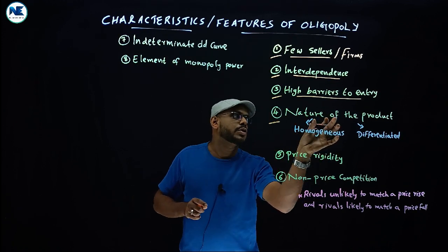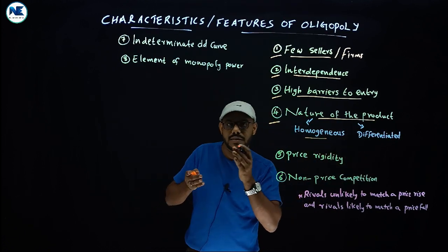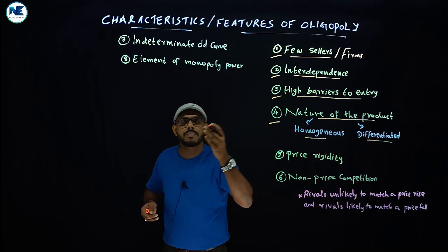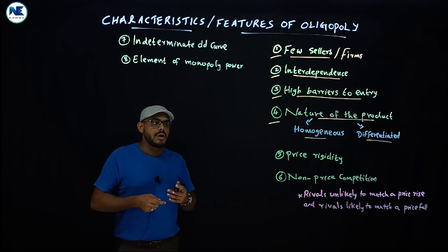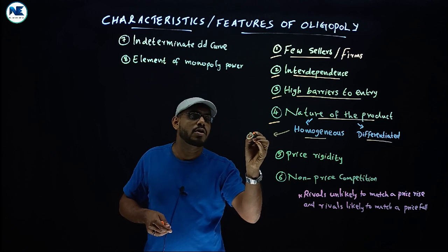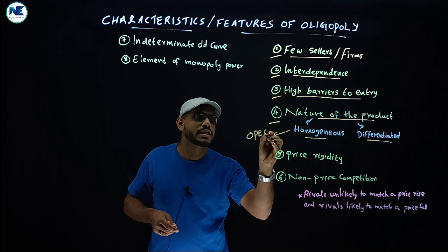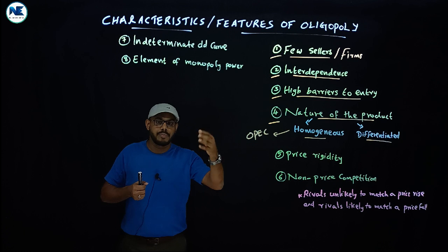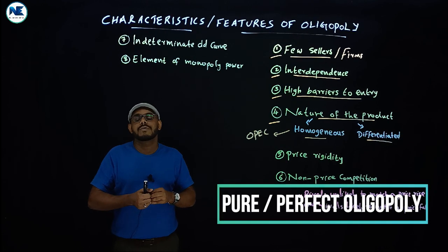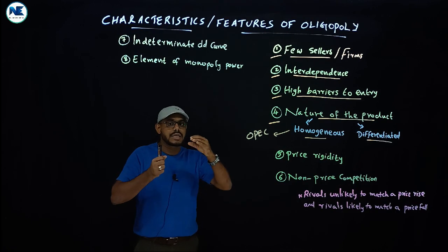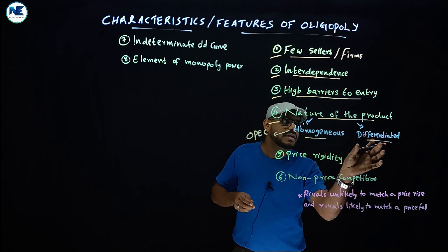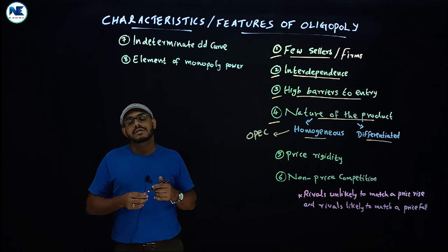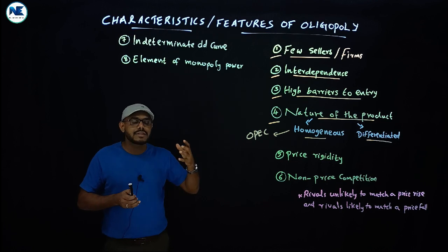The fourth point is the nature of the product. Some firms in oligopoly focus on homogeneous products — that is, identical products. On the other side, some oligopoly markets have firms producing differentiated products. Homogeneous product oligopoly is called pure oligopoly. An example of differentiated oligopoly is the automobile industry — BMW, Audi, Mercedes, etc. — where products are highly differentiated.